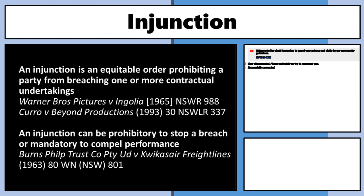We talk about injunctions in other aspects of commercial law. We use injunctions in tort to prevent some form of injustice, and in administrative law — injunctions against decision-makers for doing things. So this area comes up a lot. It is worthwhile learning how they work. By far the overwhelmingly most common type of injunction is prohibitory — that is, stopping people from doing something.